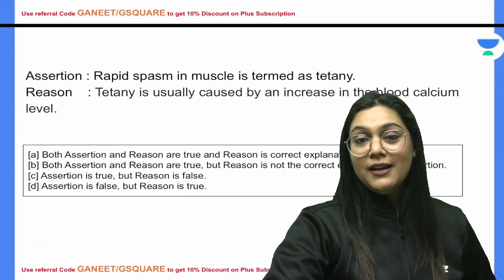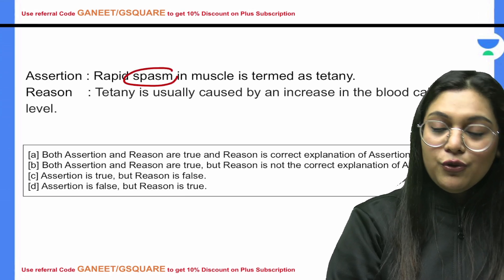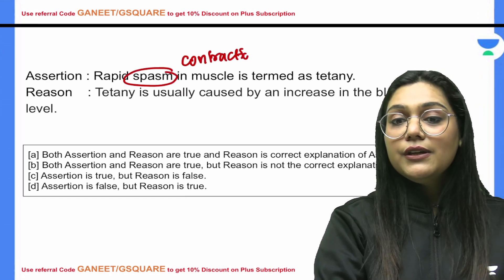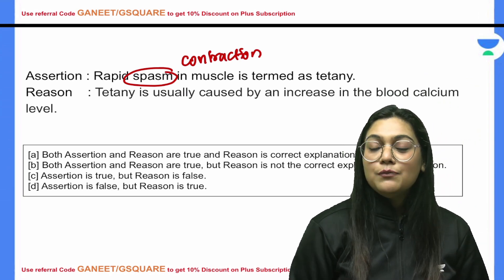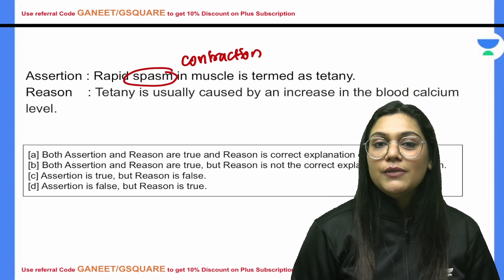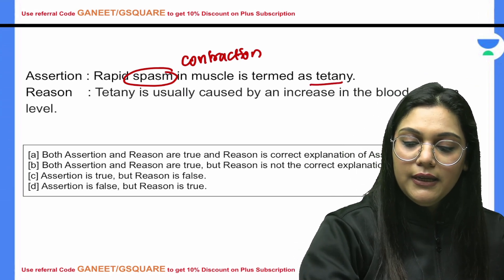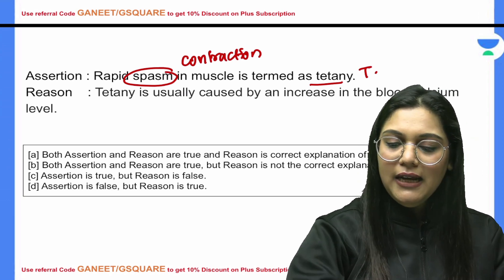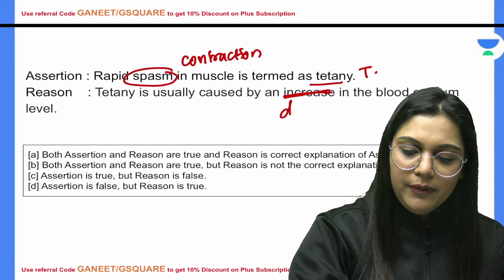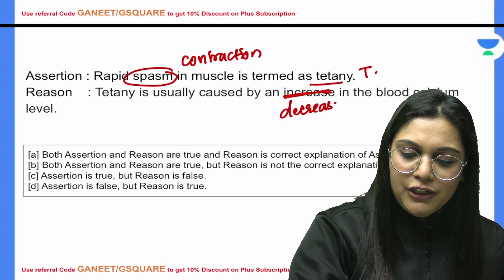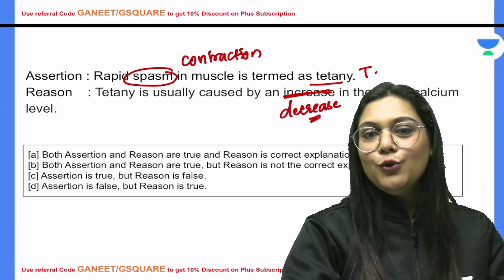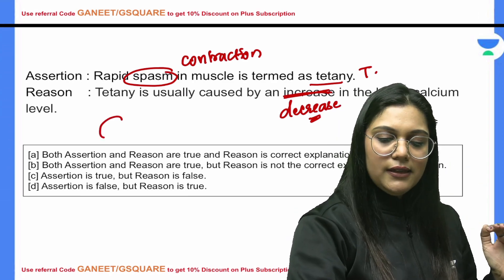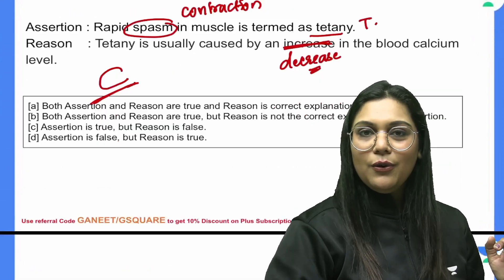Question 9: Rapid spasm means rapid contraction — so rapid contraction in muscle is termed as tetany, which is correct. The reason states tetany is usually caused by an increase in blood calcium level — but NCERT says tetany occurs when the calcium level in blood decreases. So the assertion is true but the reason is false, making the answer C option.